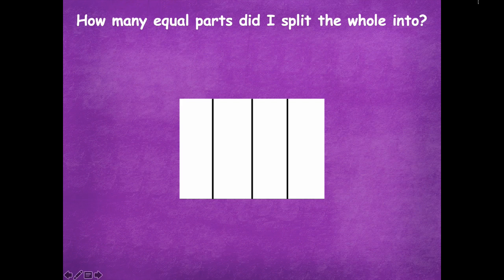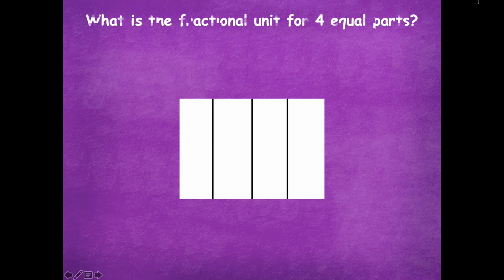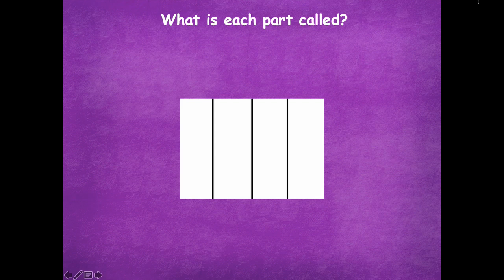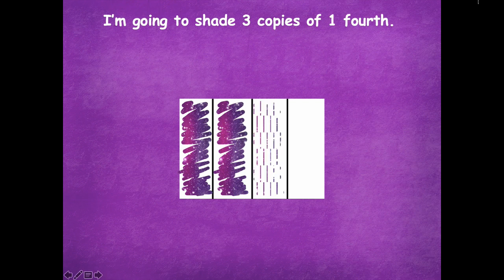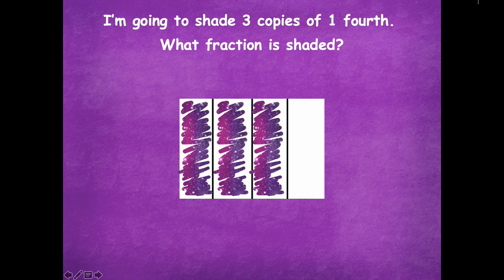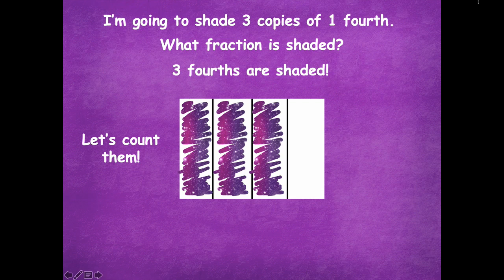How many equal parts did I split the whole into? Four. What's the fractional unit for four equal parts? It's just how many parts there are — this is split into fourths. What is each part called? One-fourth, or one quarter. Now I'm going to shade three copies of one-fourth: one-fourth, two-fourths, three-fourths. Three-fourths are shaded.